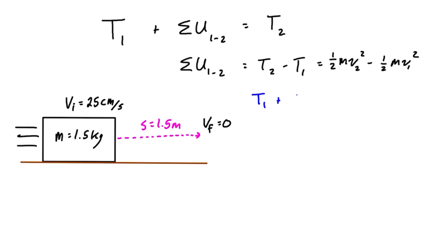T1 plus the work done is equal to T2. Let's expand this out a little bit. We have 1/2 mv1² for the kinetic energy plus the work done. That's just going to be the force of friction—we should probably label that—going this way, going the opposite direction to the distance being traveled.